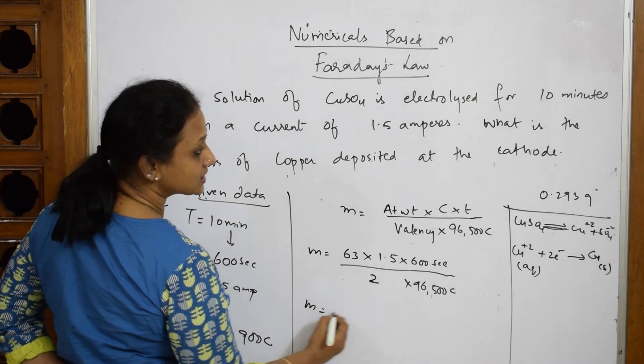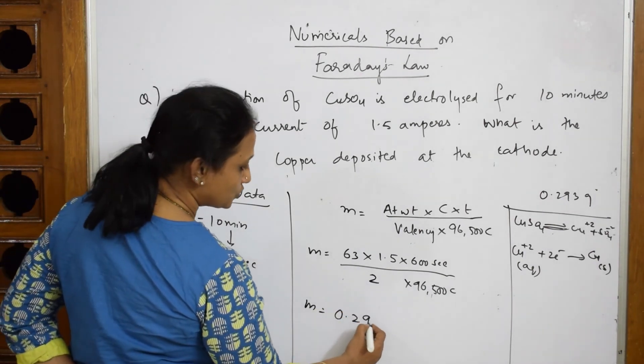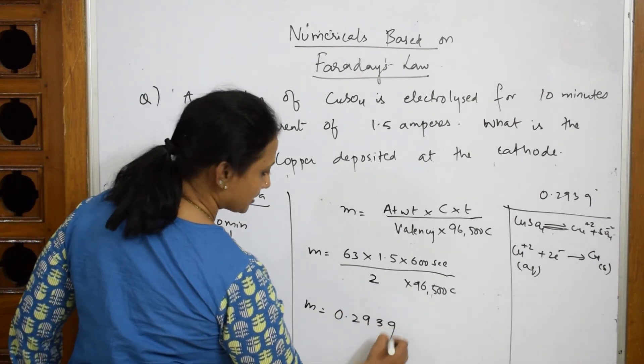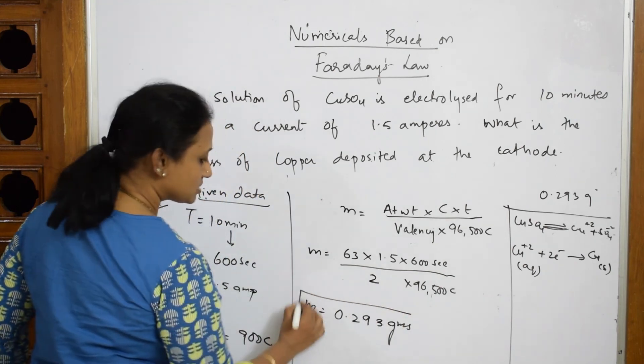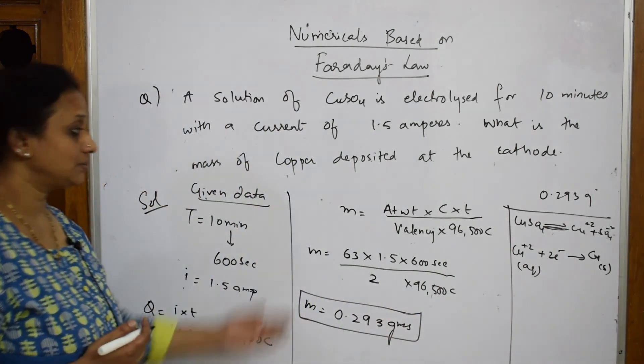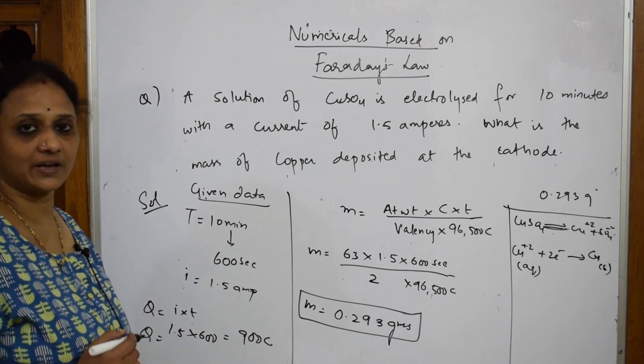So, when I solve this, I get an answer of 0.293 grams. So, this is how you can directly calculate the mass using first law of Faraday.